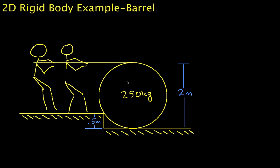Hello and welcome to this example in which we will use static equilibrium to determine the force necessary to raise this barrel up over the step that you see. In other words, we're going to discover how hard these two guys have to pull in order to get the barrel up this step.